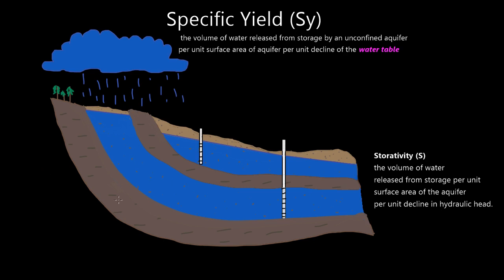If you remember in the last video, we said that storativity is defined by the volume of water released from storage per unit surface area of the aquifer per unit decline in the hydraulic head. If we look at a confined aquifer, we look at the thickness of that aquifer and a unit surface area. We're looking at the hydraulic head — the potentiometric head — inside this aquifer. Remember, the confined system is under pressure, so water is rising in our well up to a certain level above our confining unit.